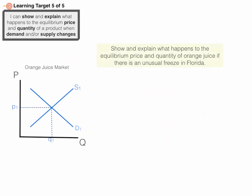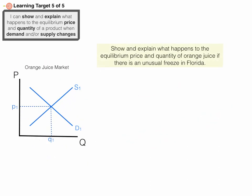Let's look at our next example — the orange juice market. The problem says: show and explain what happens to the equilibrium price and quantity of orange juice if there's an unusual freeze in Florida. It's either going to cause the supply of orange juice to change or the demand for orange juice to change. With the unusual freeze in Florida, who does that affect most directly or first? The supply of oranges is going to go down, and oranges are an input to orange juice, so we can assume that the supply of orange juice is also going to go down.